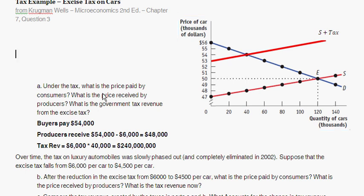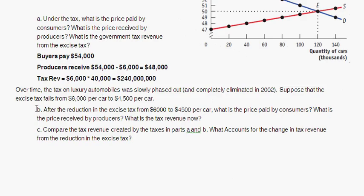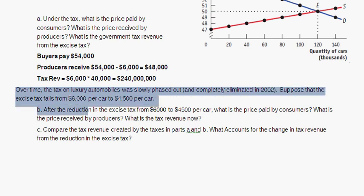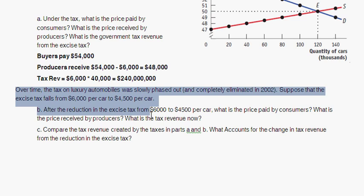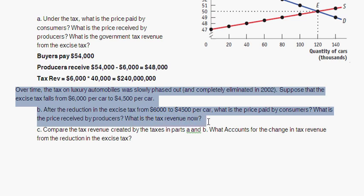Over time, the tax on luxury automobiles was phased out and eliminated in 2002. For this question, suppose the excise tax falls from $6,000 per car to $4,500 per car. After the reduction, what is the price paid by consumers, what is the price received by producers, and what is the tax revenue? We'll follow the same steps as before, but with this new tax rate.